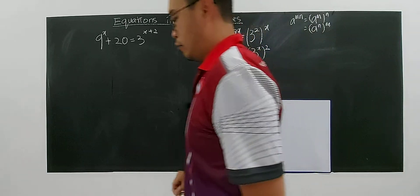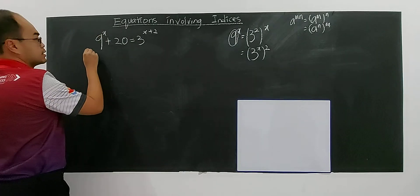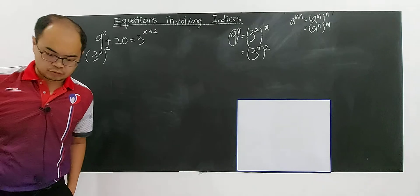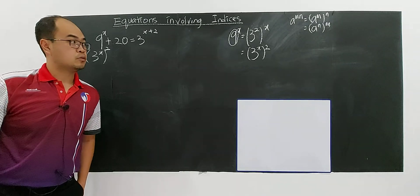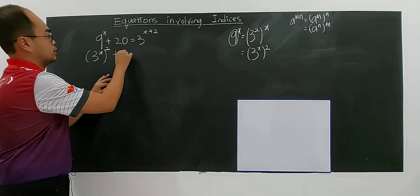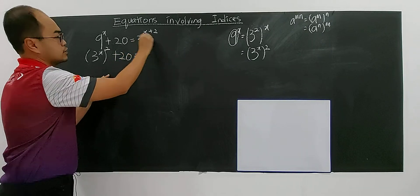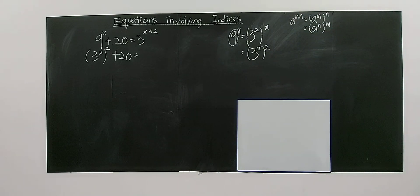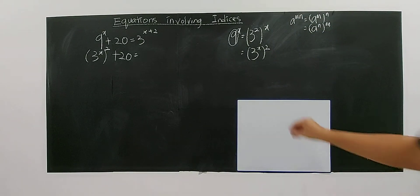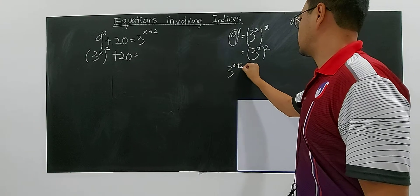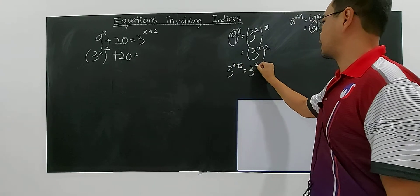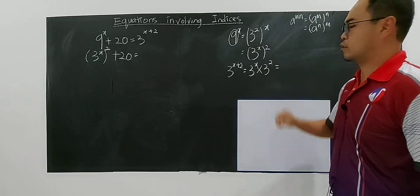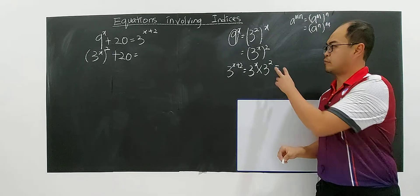So I rewrite this as 3 to the power of x, to the power of 2. Now, adding 20. And for the term 3 to the power of x plus 2, I can represent 3^(x+2) as 3^x multiplied with 3^2, because of the same base multiplication rule.